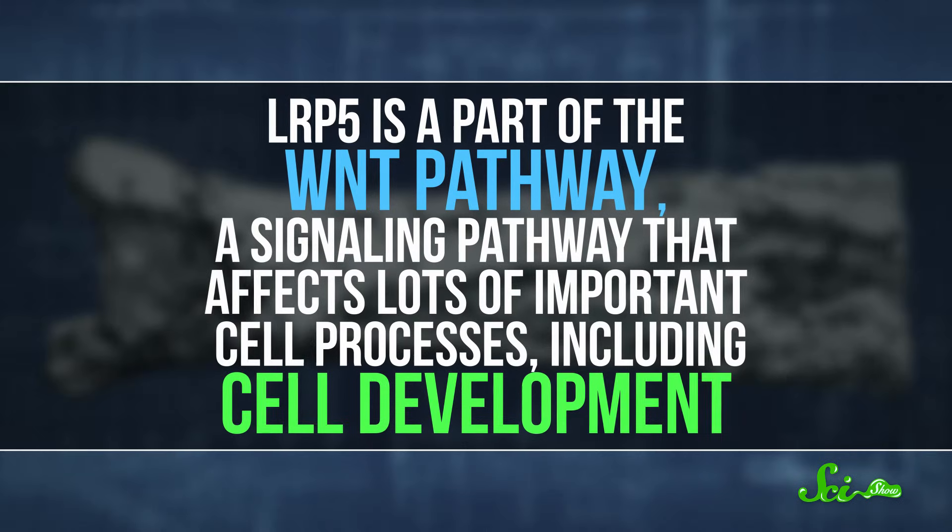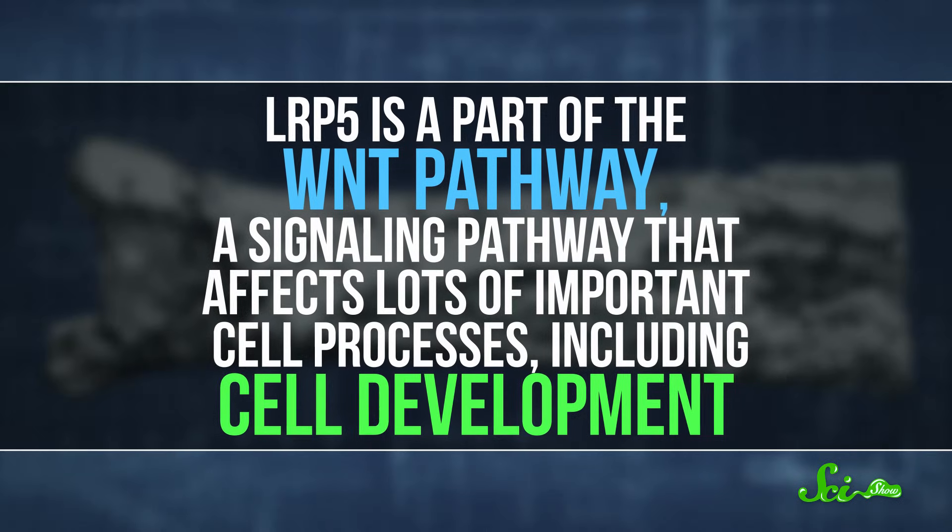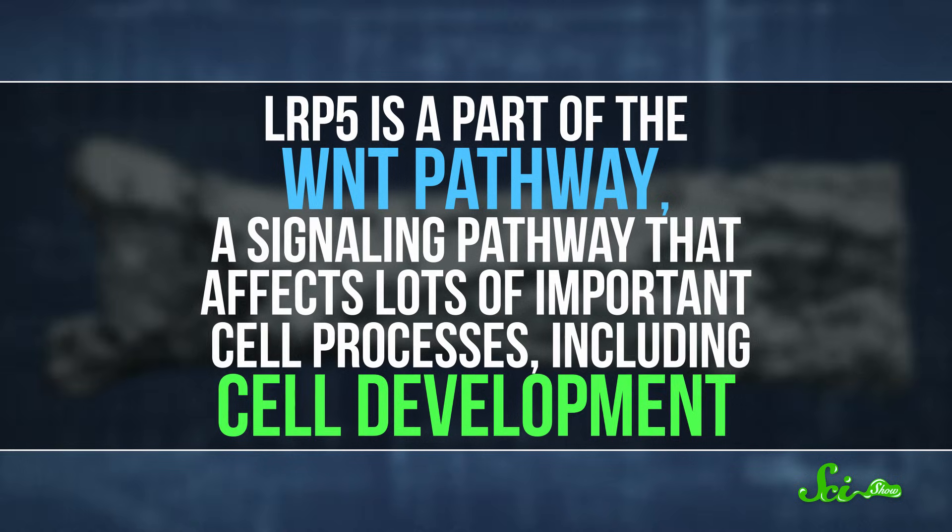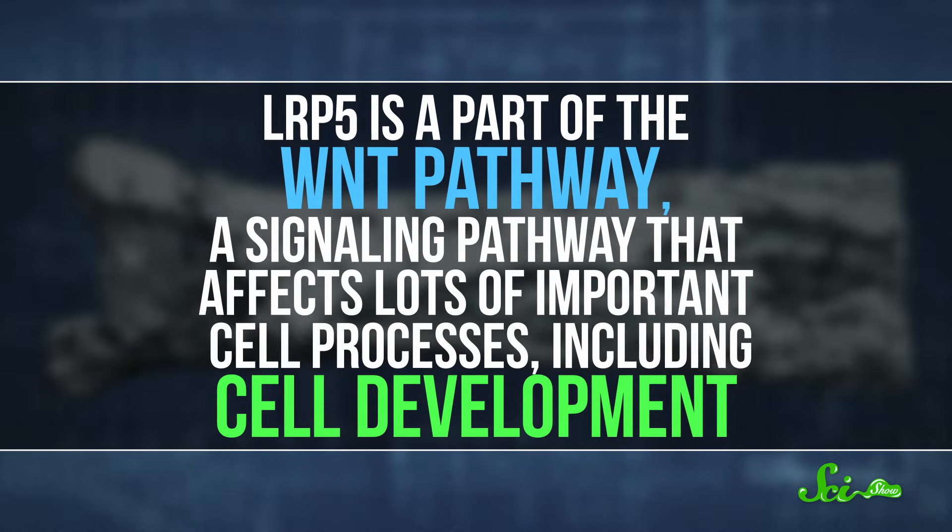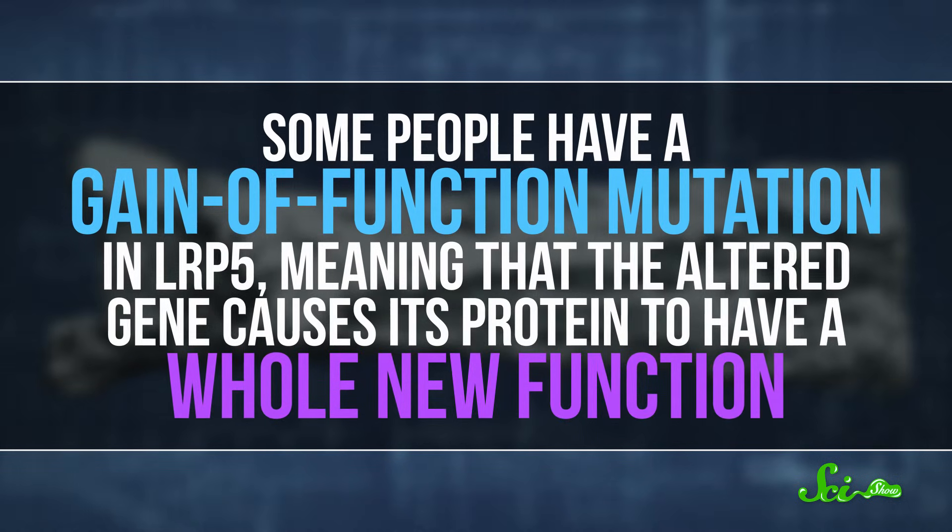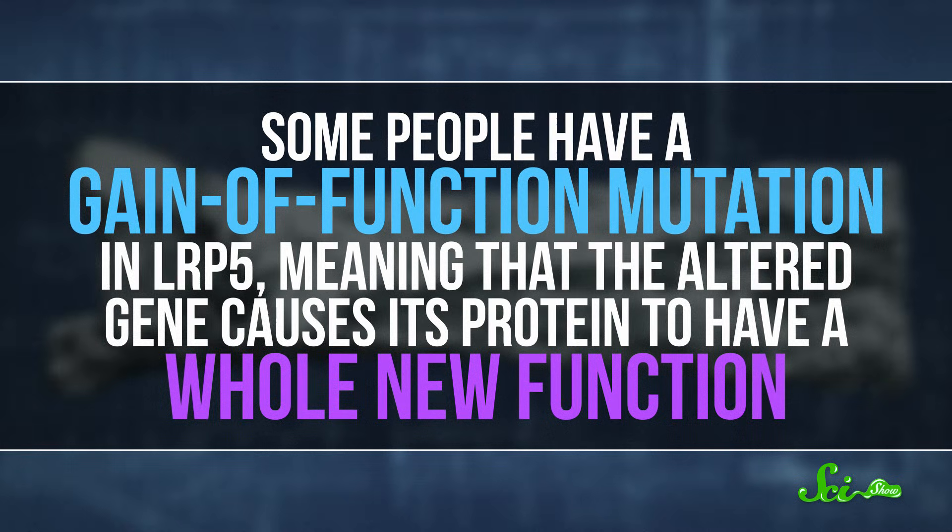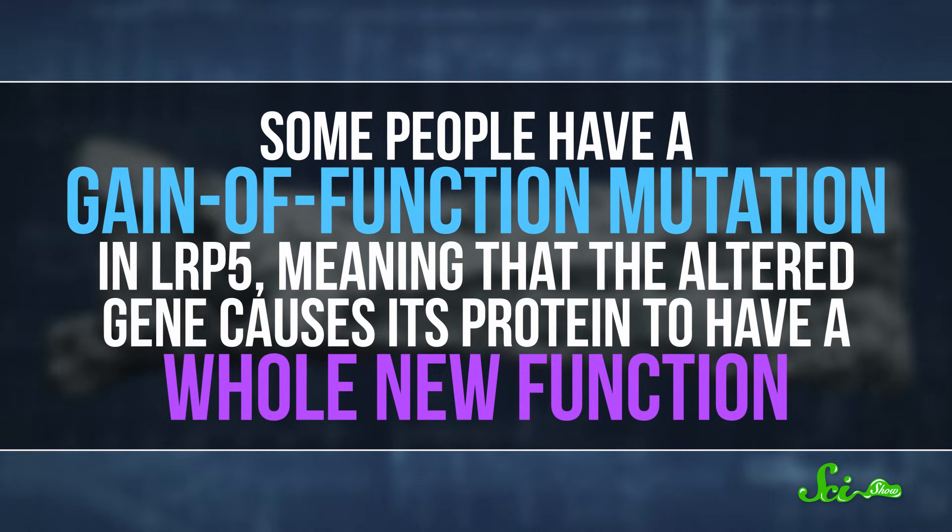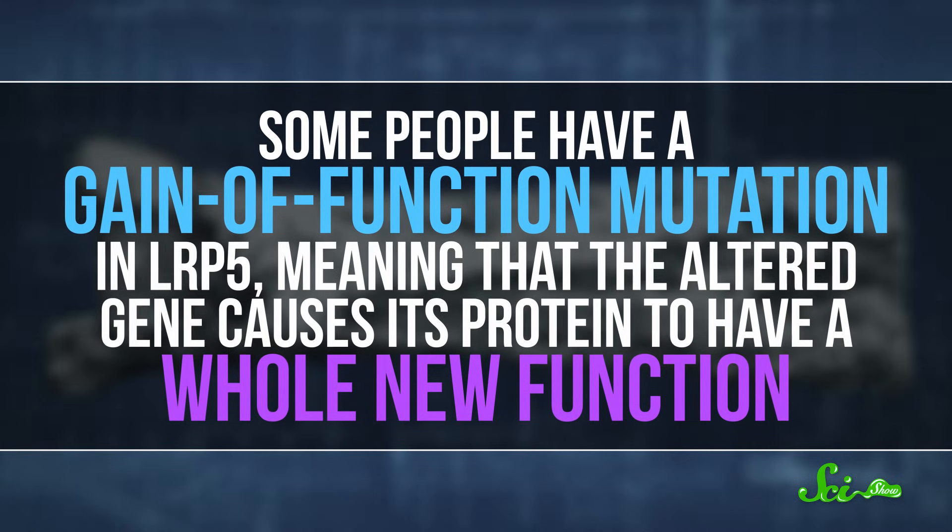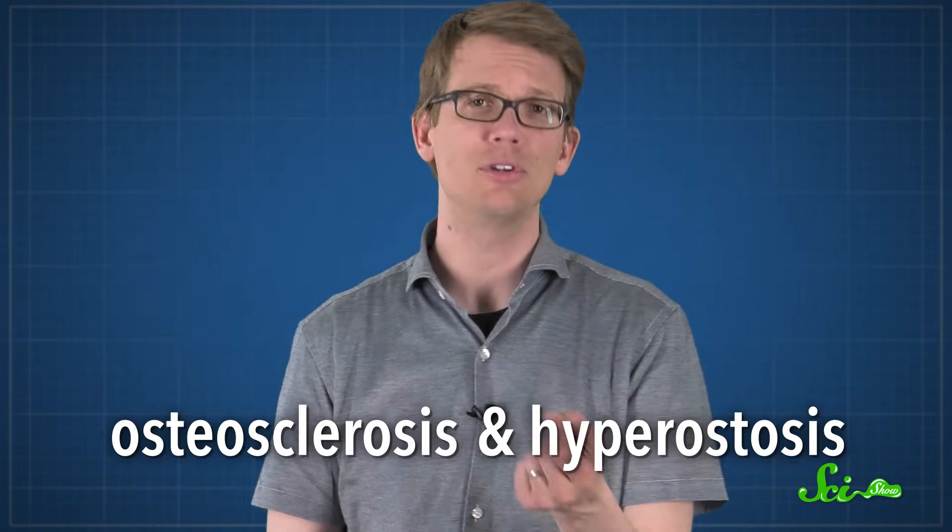We know that LRP5 is part of what's known as the Wnt pathway, a signaling pathway that affects lots of important cell processes, including cell development. And some people have a gain-of-function mutation in LRP5, meaning that the altered gene causes its protein to have a whole new function. It seems this mutation can kickstart certain signaling pathways on your bone cells, making them grow denser and bulkier, conditions that are generally called osteosclerosis and hyperostosis.